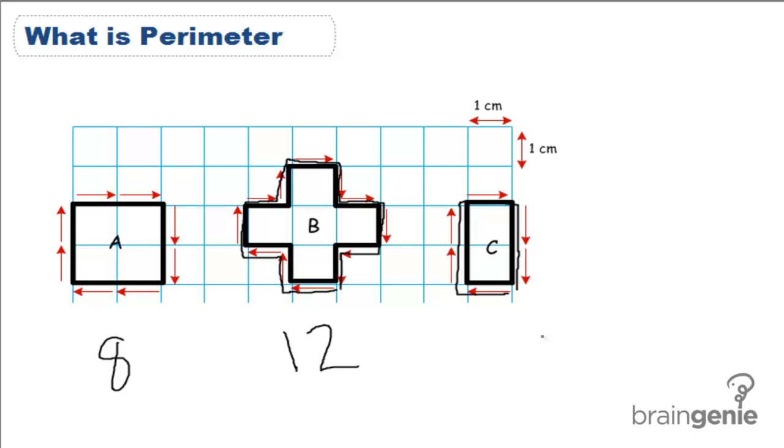Now, sometimes it's not going to be that easy, and we're not going to have our information on a grid, but rather in a word problem or some other sort of shape. So here, all you need to do to find the perimeter of a polygon is add the sides together.